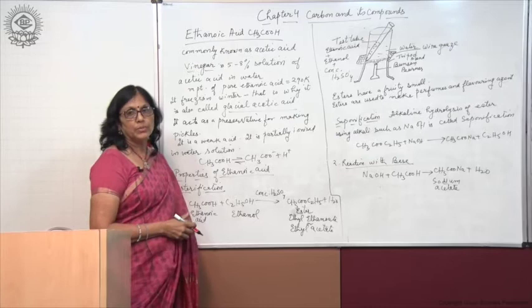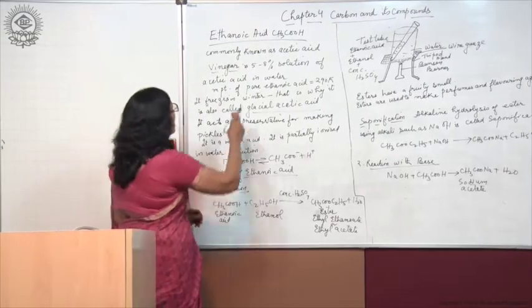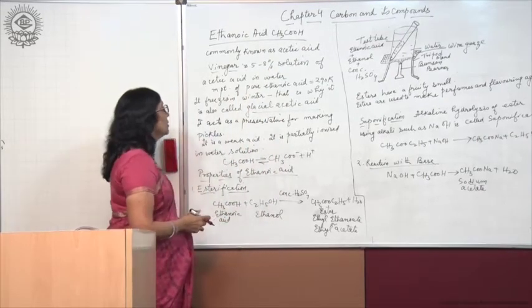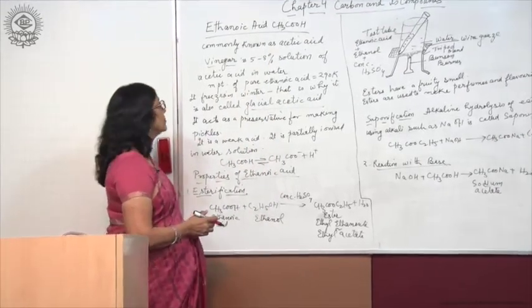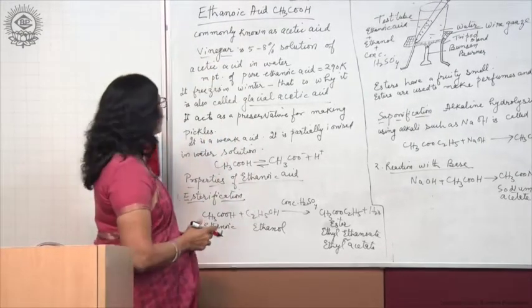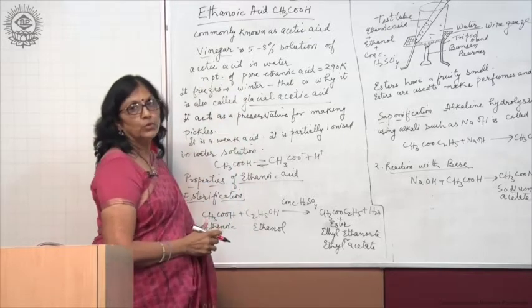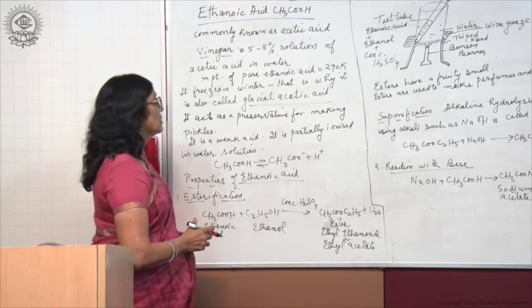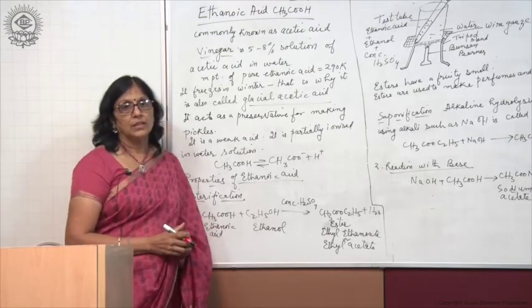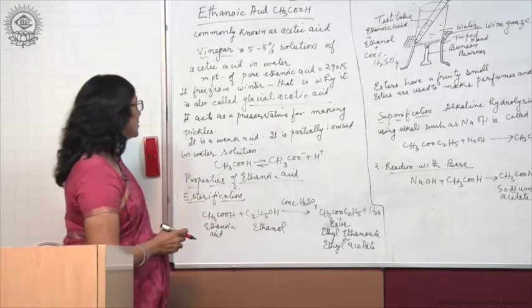It is a very good preservative used to preserve pickles. About 5 to 8 percent solution of acetic acid in water forms vinegar. Acetic acid is the common name of ethanoic acid. Its melting point is very low, 290 Kelvin, which is why it freezes in the winter. This is the reason it is also called glacial acetic acid.